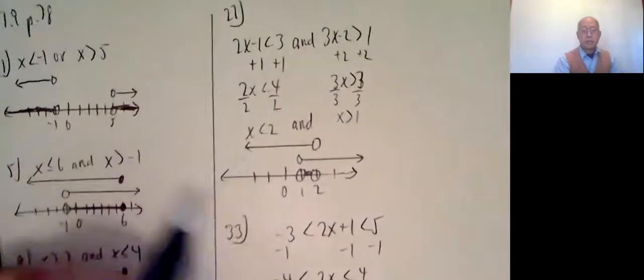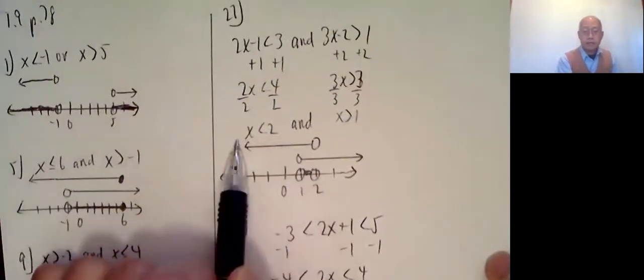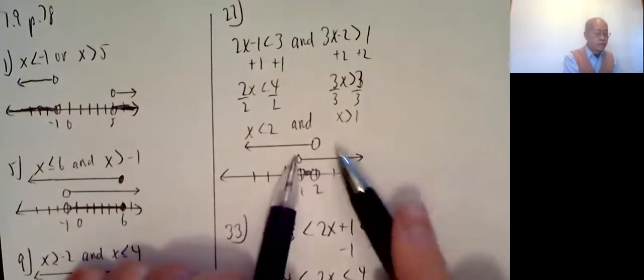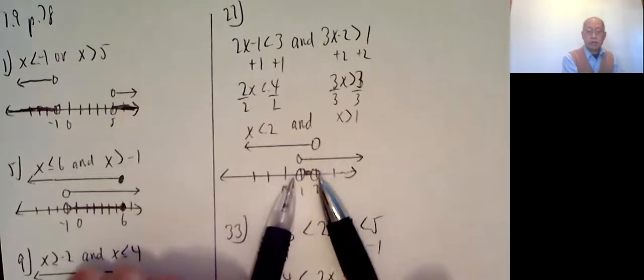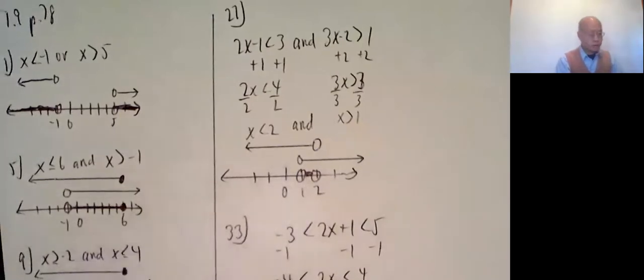Okay. And just like the other, x is less than 2, shade above, is like that. Greater than 1 is like that. What do they have in common? The twice shaded area. It's only this region between 1 and 2. So, open circle, open circle, shading everything between 1 and 2.